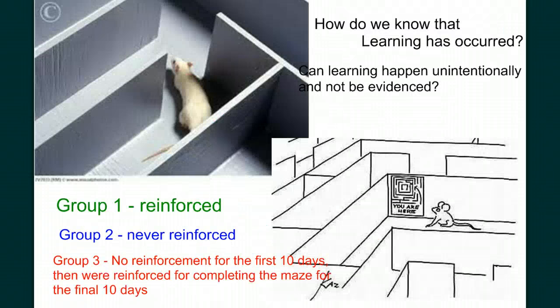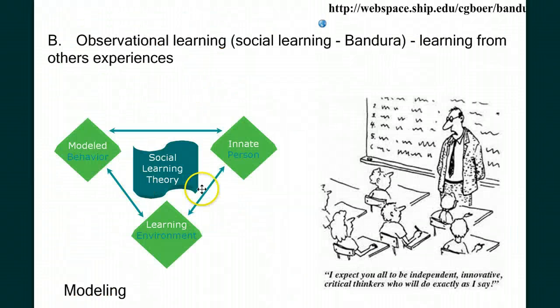Now let's move on to observational learning, or social learning. Albert Bandura had studied associative learning — both classical and operant conditioning. While he found the principles valid, he felt that they alone could not explain the sheer volume of learning that goes on. How could anyone have the time or opportunity to have so many experiences? He set out to show that there was a process through which we can learn from other people's experience. He called it observational learning, and it became the basis of his social learning theory.